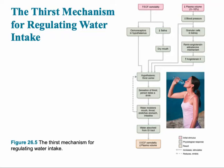The thirst mechanism is intimately controlled in the hypothalamus and it's responsible for regulating water intake. For example, if we're sweating and not drinking enough water, the body responds by secreting aldosterone because we need to reabsorb the sodium that we're losing in our sweat. And also, to compensate for the loss of water, ADH is released to reabsorb water.